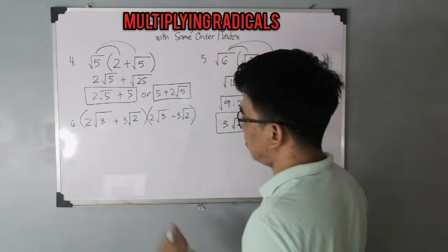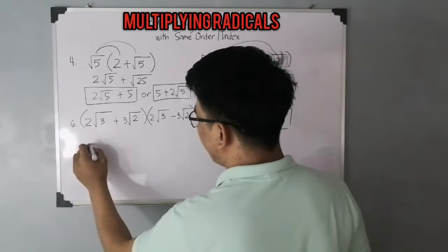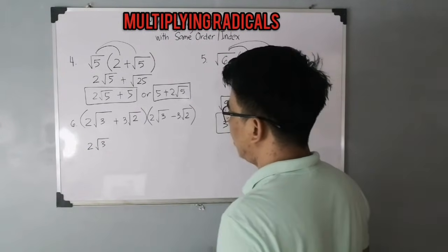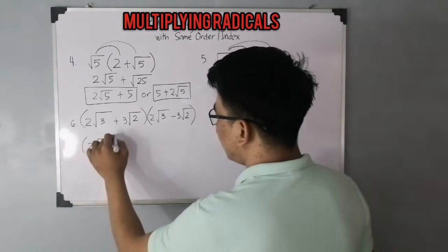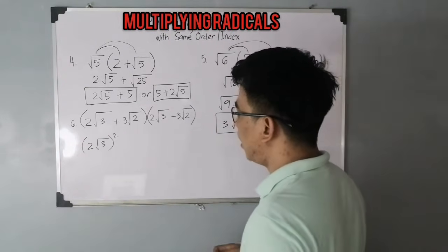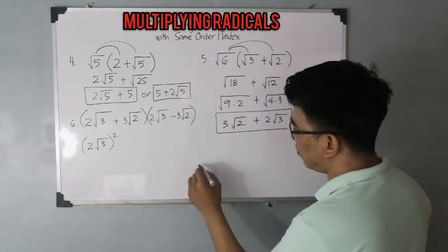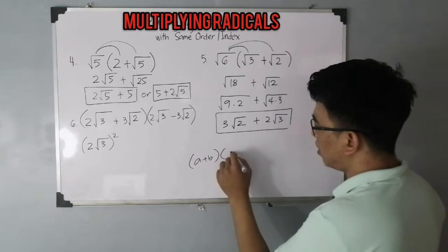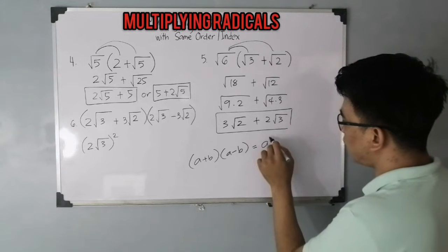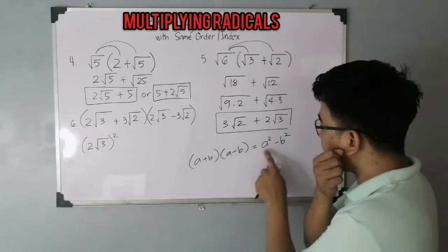The pattern for the special product (a + b)(a − b) equals a squared minus b squared. Following this pattern, square the first term: (2√3)² minus square the second term: (3√2)².